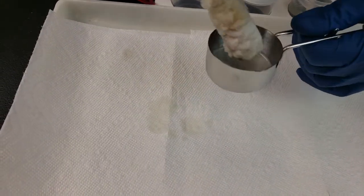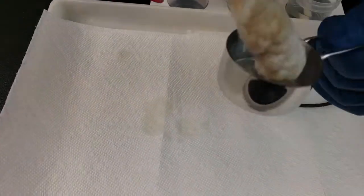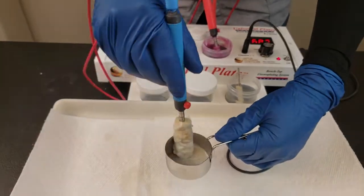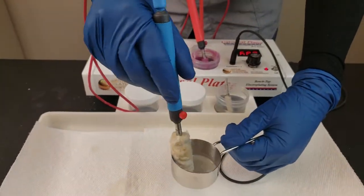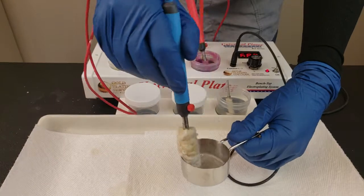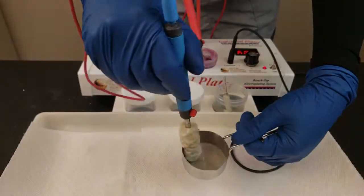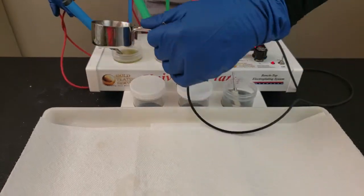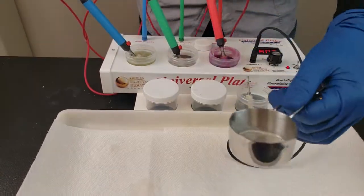So we're going to ElectroClean it. This carries a lot of solution, so I'm going to pour some back. We're going to ElectroClean it for probably about a half a minute. We're doing this at 7 volts. I've been getting a lot of people asking how our brush rose gold works and what it looks like, so I'm pretty excited to show you this one.